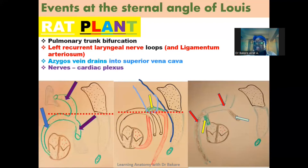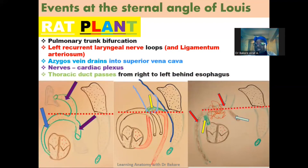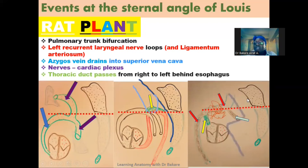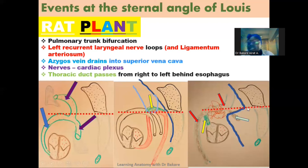N is for nerves — we have the cardiac plexus also seen along the Sternal Angle of Louis. T is the thoracic duct: at the level of the Sternal Angle of Louis, the thoracic duct passes from the right side to the left side behind the azygous vein.